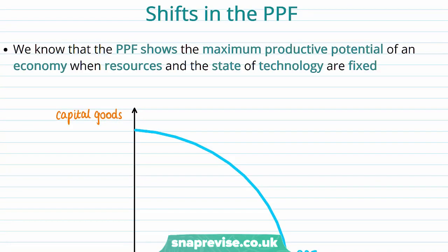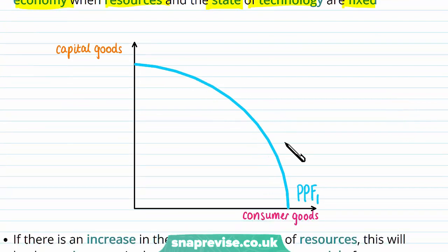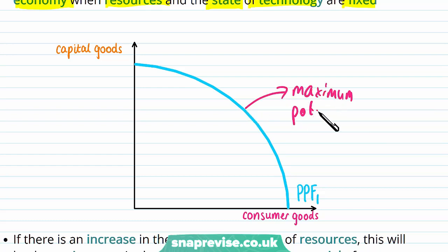Now we're going to move on to shifts in the PPF curve. The PPF curve is a visualization of the maximum productive potential of an economy when resources and the state of technology are fixed. Any movements along the curve suggest that the number of resources and state of technology are not changing — the PPF curve simply shows the maximum potential output given fixed resources and fixed technology.